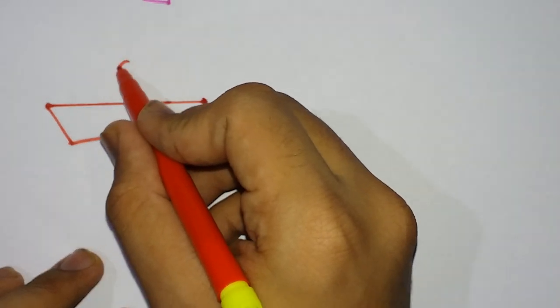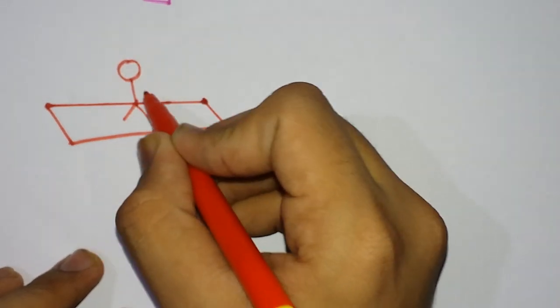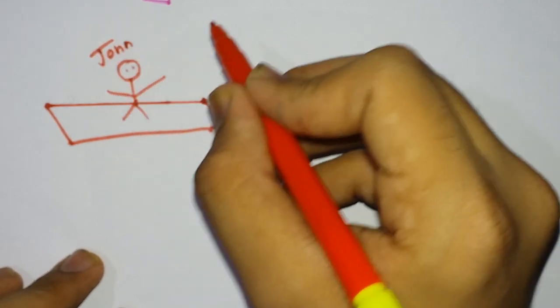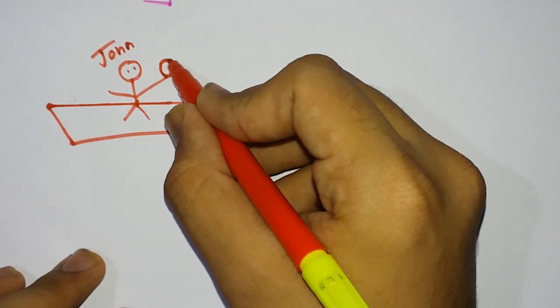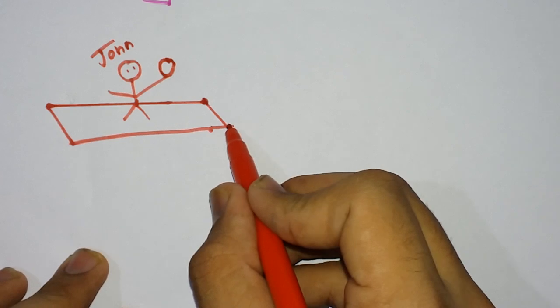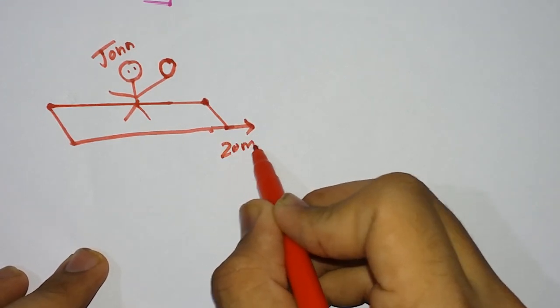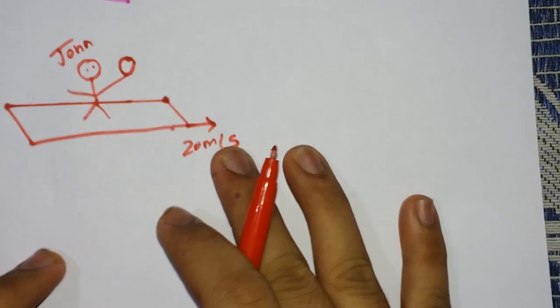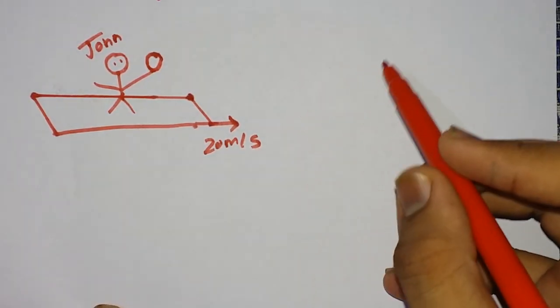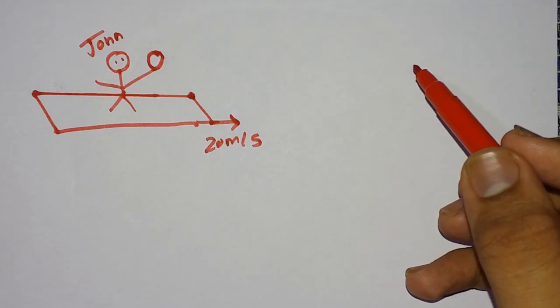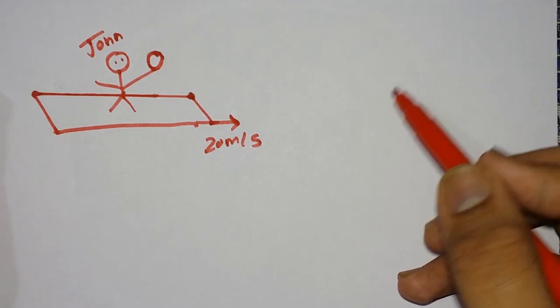It's a platform and a person is standing here. Let this person be John. John has a ball in his hand and this platform is moving with a velocity of, let's say, 20 meters per second. It is in motion at 20 meters per second, but according to relative motion, John is at rest.